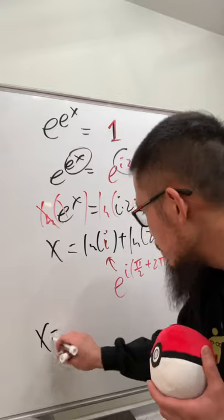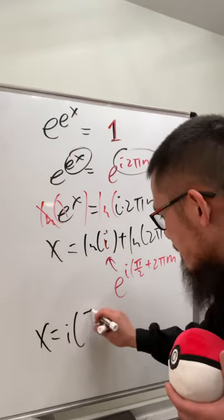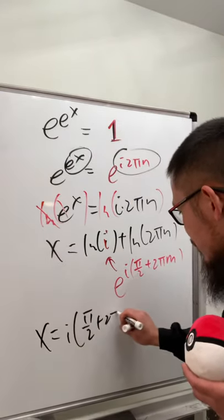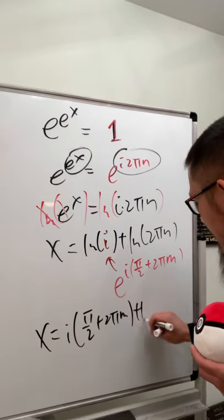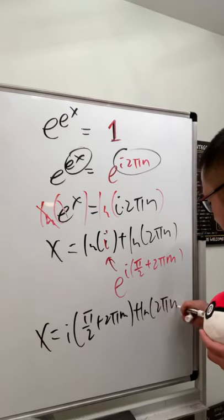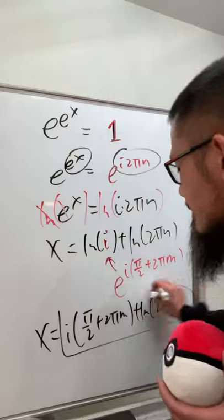So now we have x is equal to that, which is i times pi over 2 plus 2 pi n plus ln of 2 pi n, and this is it. Done.